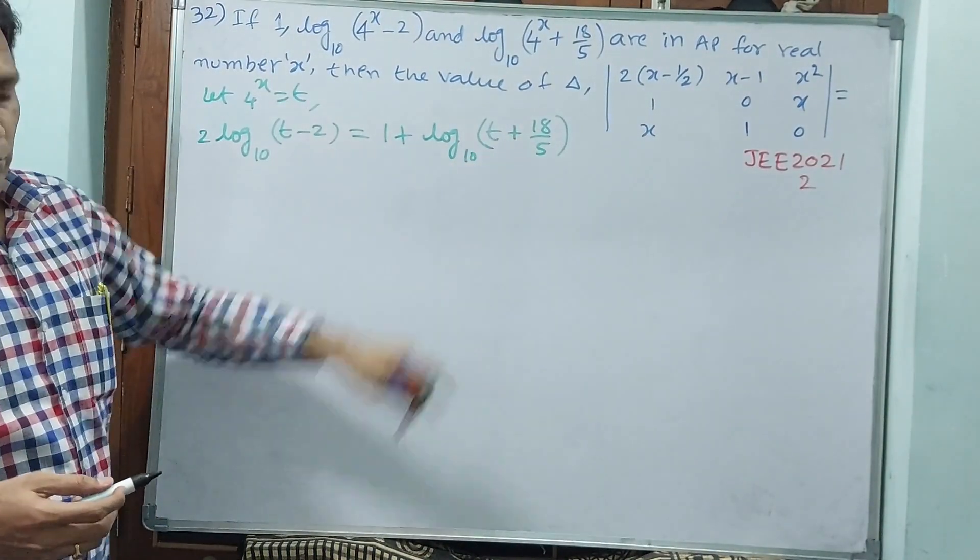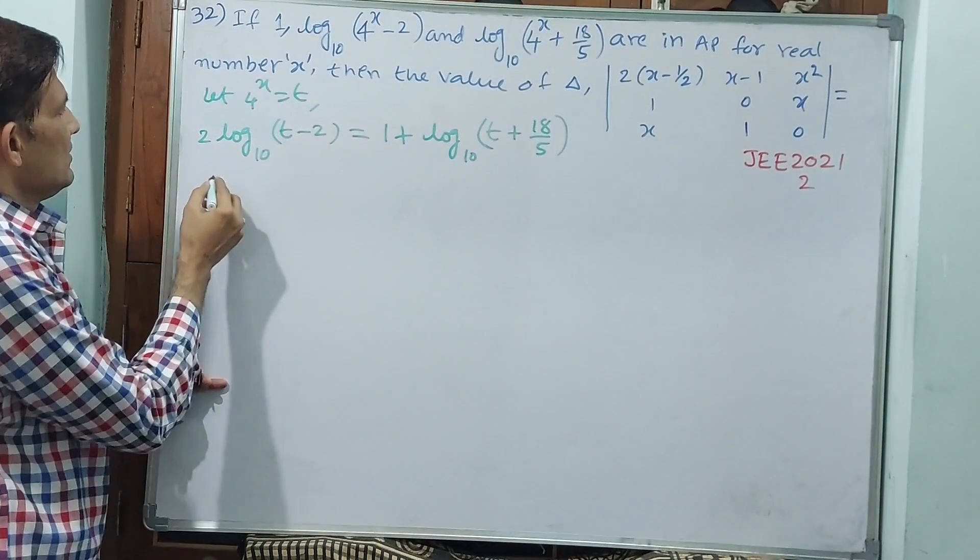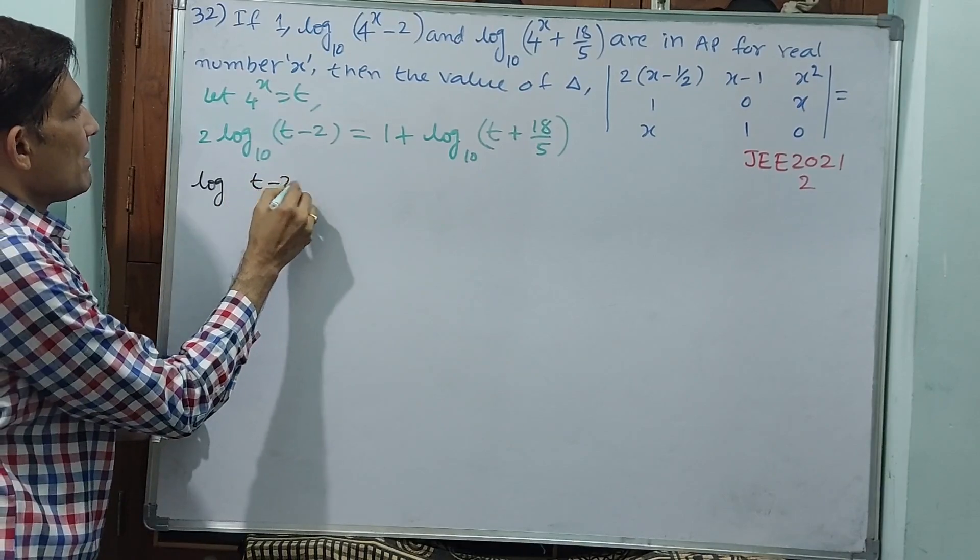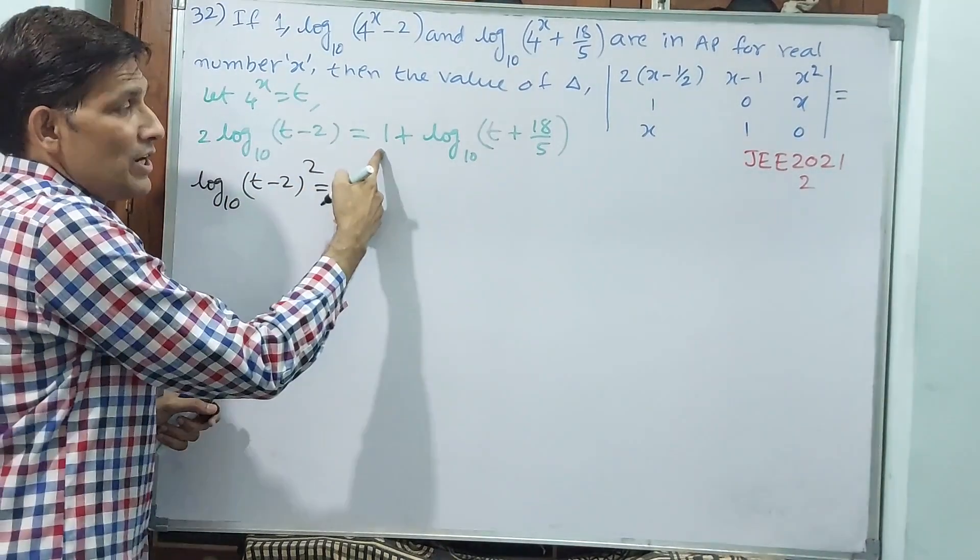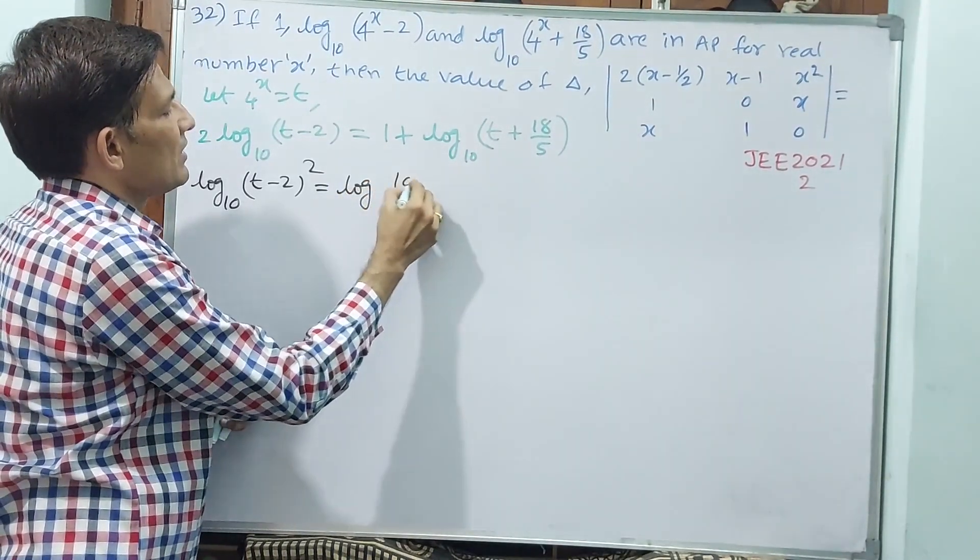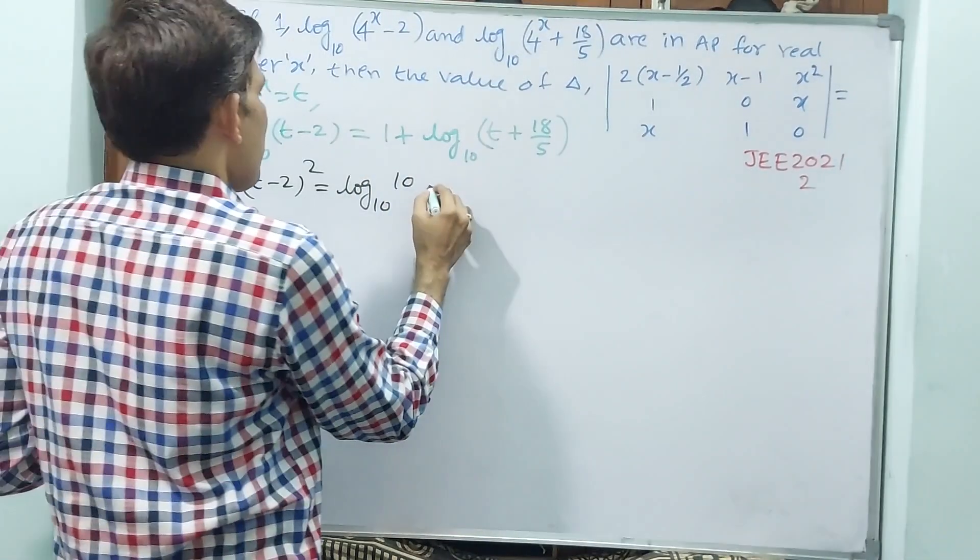Now what we can say: change this RHS. So I will write like this. You see, log (t - 2)² to the base 10 is equal to, see, this one I shall write log 10 to the base 10. Why? You must see all at one base. You should have 10, 10, 10. Then only it is possible.